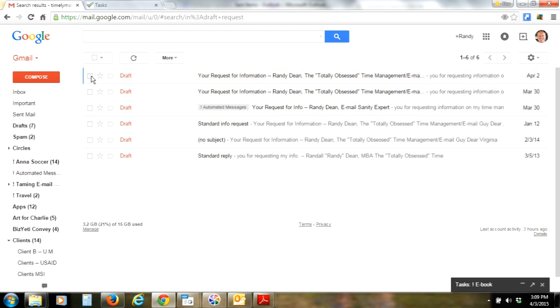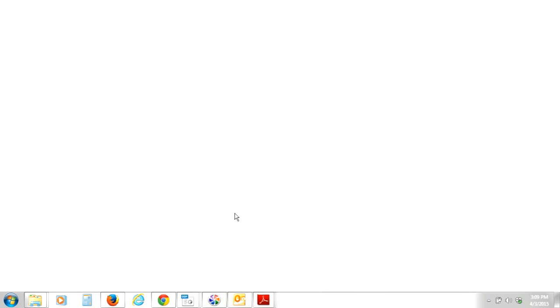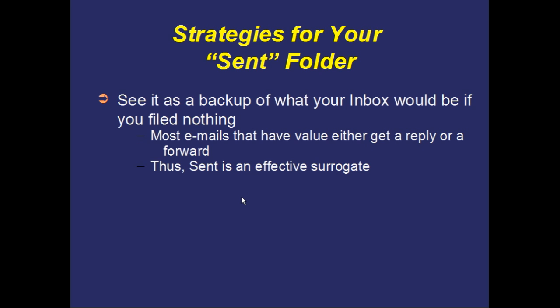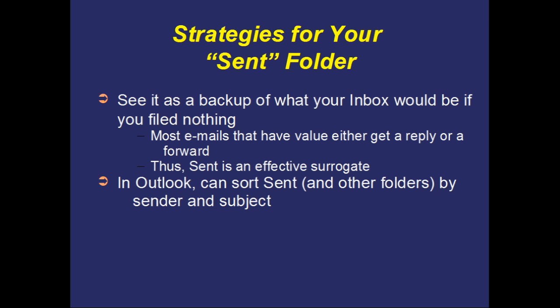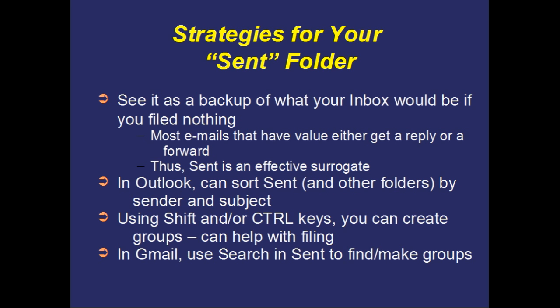Either way, you can quickly and easily select and create groups in your sent items folder to do what you'd really like to do. Your sent items folder can be a surrogate — it's a place to find stuff and manage your stuff. You can sort it by subject, by sender, by size. You can use sorting by size as a way to reduce mailbox size. You can use the shift and control keys to create groups which can really help speed up filing. In Gmail, use your search function within your sent folder to find stuff and make groups using your checkboxes. All of these capabilities give you a lot more confidence keeping things out of your inbox proper.